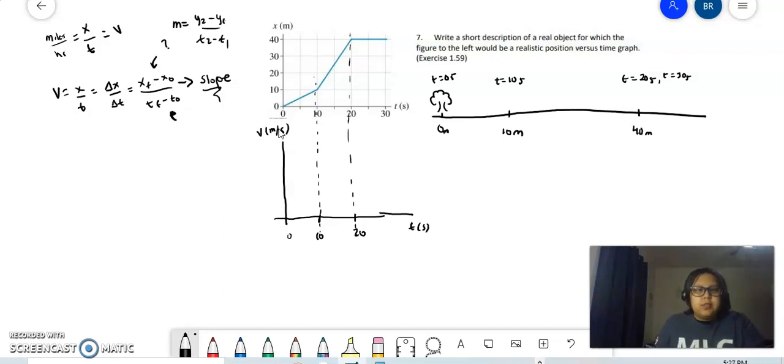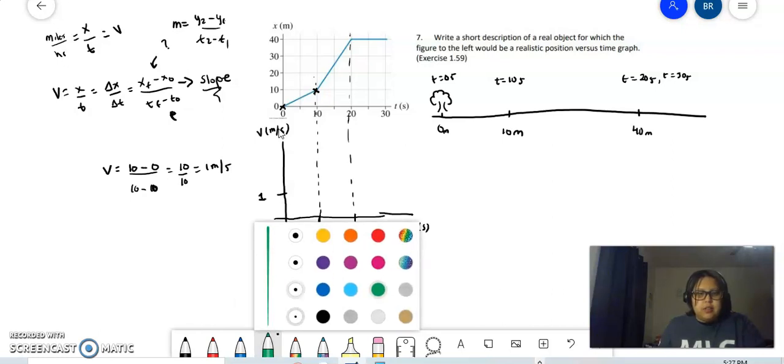Now let's get the slope on these two points. We're going to choose the origin and 10, 10. So let's get the velocity. The velocity is 10 minus 0 over 10 minus 0. We have 10 over 10, so we have 1 meter per second. So we are going to have the velocity to be 1 meter per second.